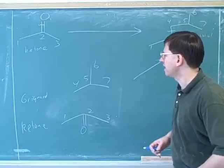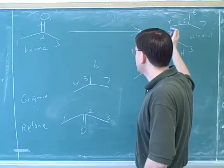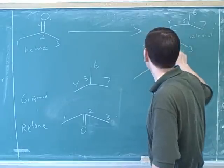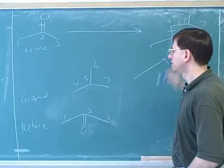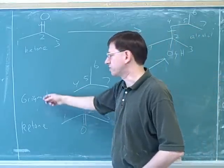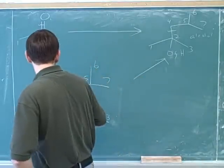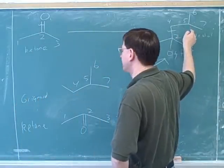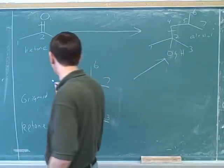I didn't make that clear — in the product they'll be connected. But my question is, in the product the number four was attached to the number two. What's the number four attached to in the starting material if it was a Grignard? Remember we're not trying to just redraw the product because we already have a picture of the product. We're trying to draw a starting material that could lead us to the product.